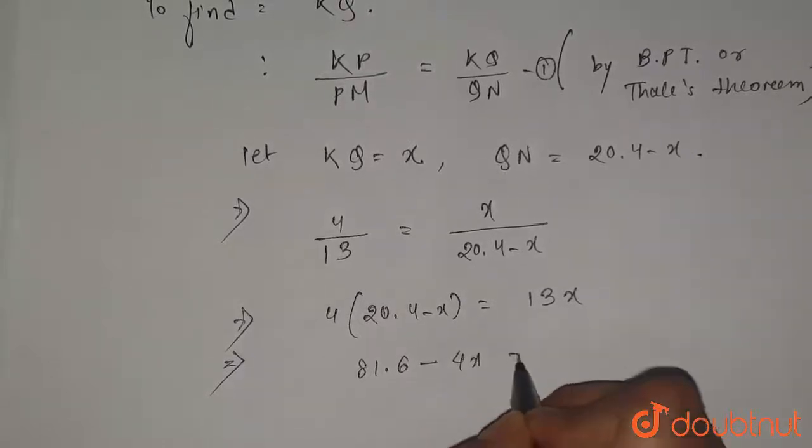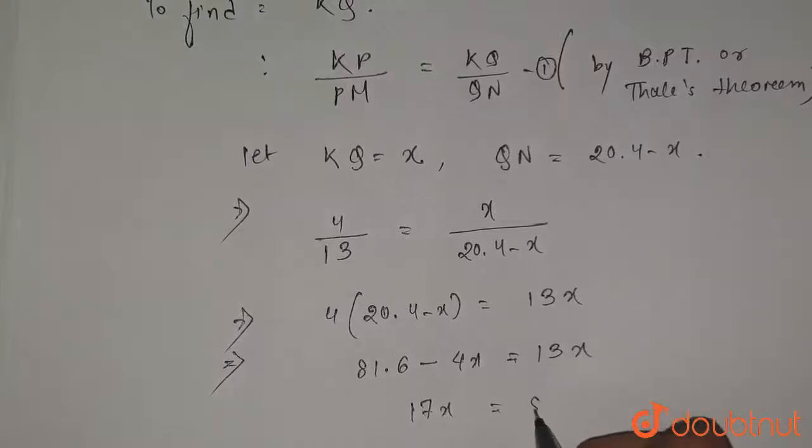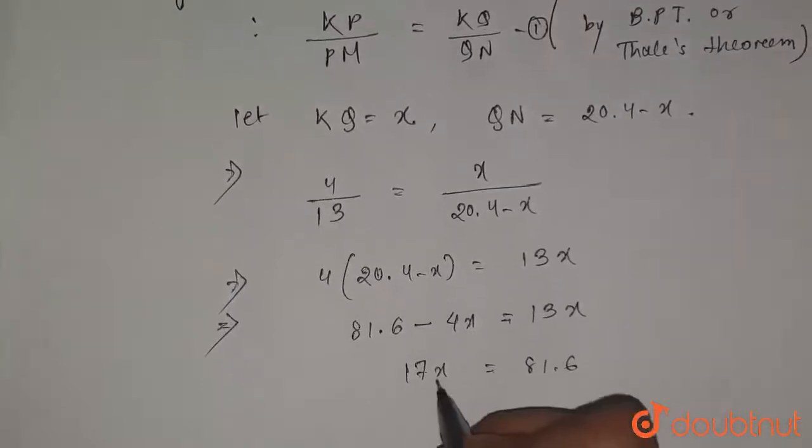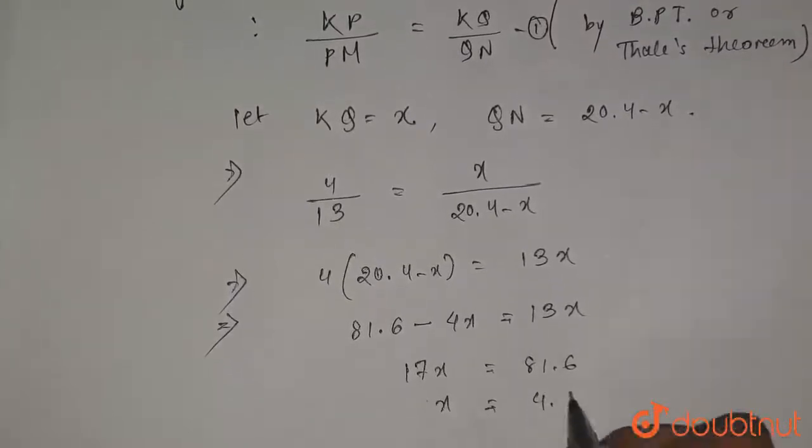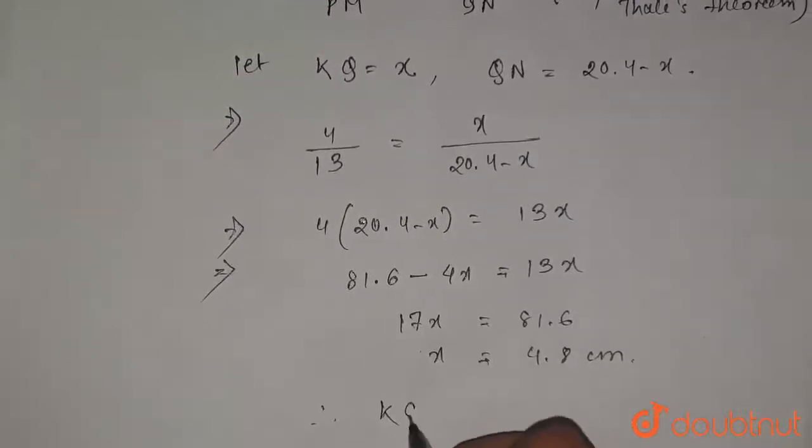So 17x will be equals to 81.6. So from here the value of x will be equals to 4.8 centimeter. Therefore, the value of KQ is equals to 4.8 centimeter, which we had to find. So this is the required solution. Thank you.